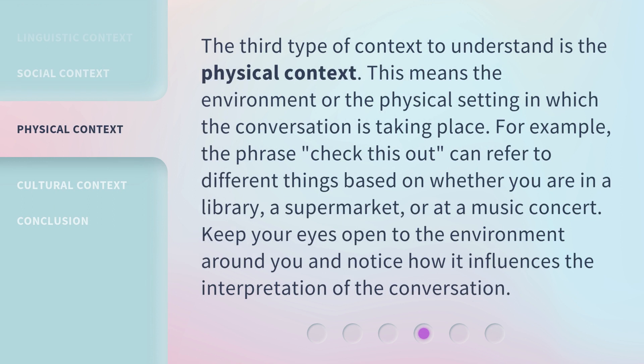The third type of context to understand is the physical context — the environment or physical setting in which the conversation is taking place. For example, the phrase 'check this out' can refer to different things based on whether you are in a library, a supermarket, or at a music concert. Keep your eyes open to the environment around you and notice how it influences the interpretation of the conversation.